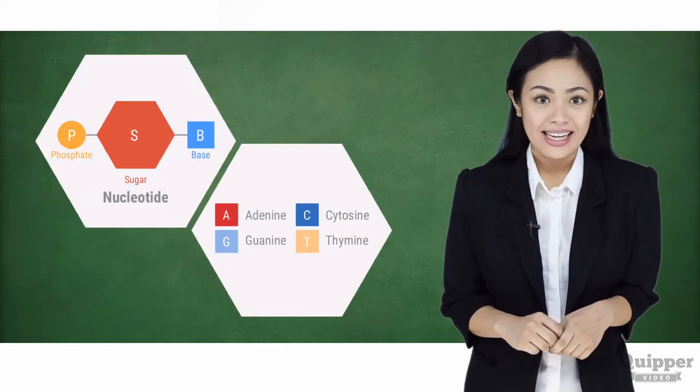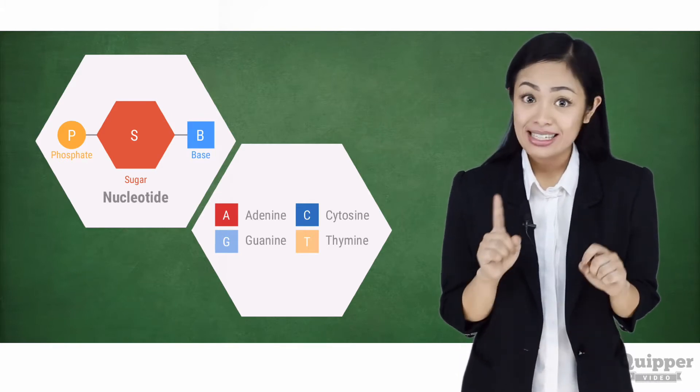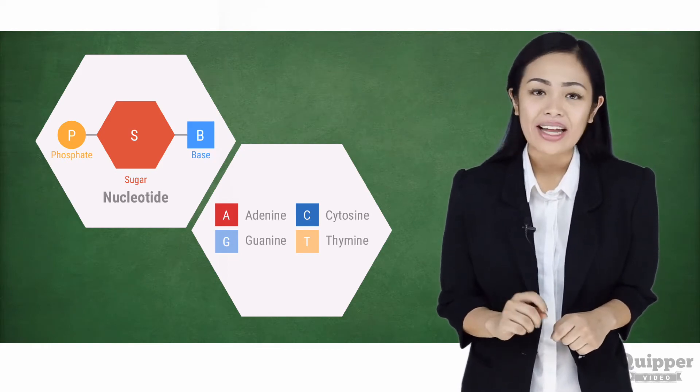The nitrogenous base of a DNA has four types: the cytosine C, thymine T, adenine A, and guanine G.